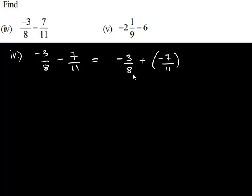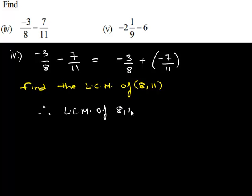Now here we don't have common denominators, so let us find the LCM of 8 and 11. As you can see here, both 8 and 11 do not have common factors. Therefore, the LCM of 8 and 11 will be equal to the product of 8 and 11, which gives 88.